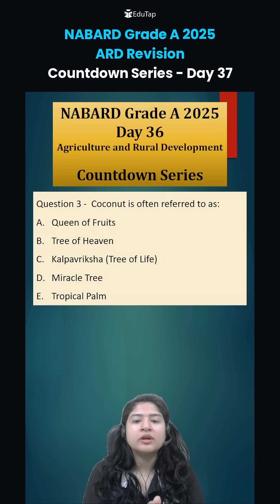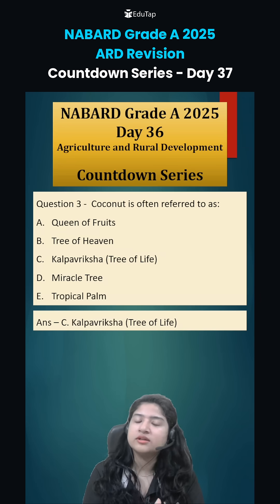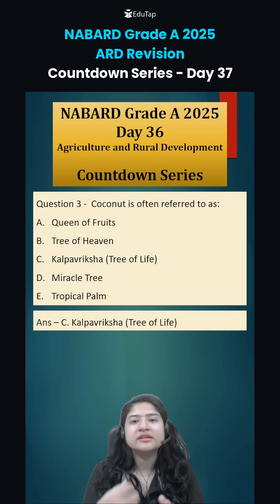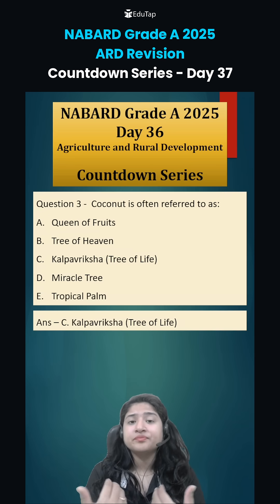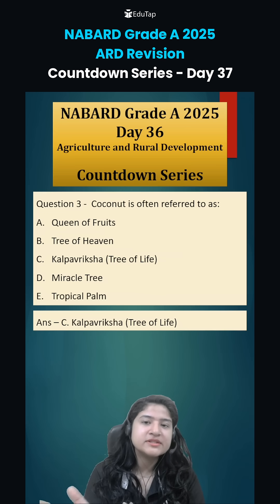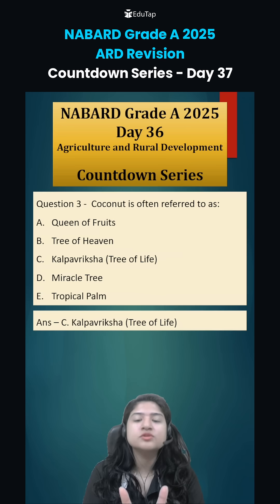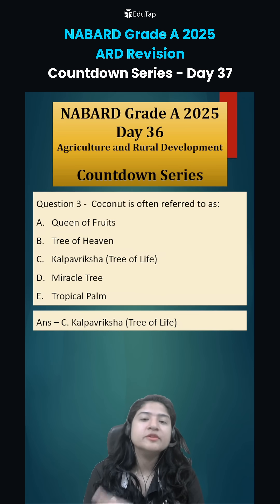Coming to question number three: coconut is often referred to as the tree of life, or 'Kalpavriksha', because all parts of the coconut are used for one thing or another. For example, the coconut itself is used for consumption, the water is very nutritious, the leaves are used for various purposes like making eating plates, and the stem and branches are used for making furniture and so on.